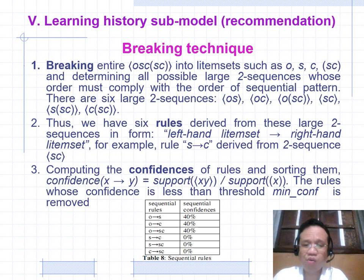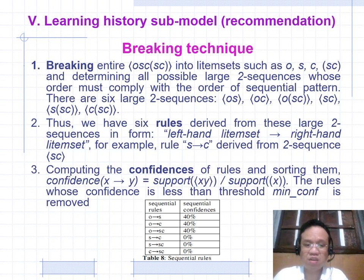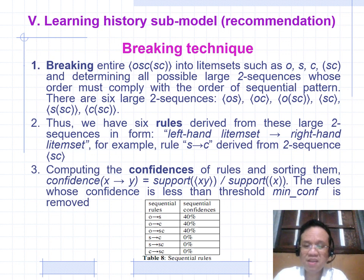There are 6 sub-sequences: OS, OC, OSC, SC, SSC, CSC. We have 6 rules derived from these sub-sequences in the form of left-hand item set implies right-hand item set. For example, rule X → OC is derived from C1: {SC}. Computing the confidence: confidence(X → OC) = support(X, Y) / support(X). Rules whose confidence is less than a threshold minimum confidence are removed.